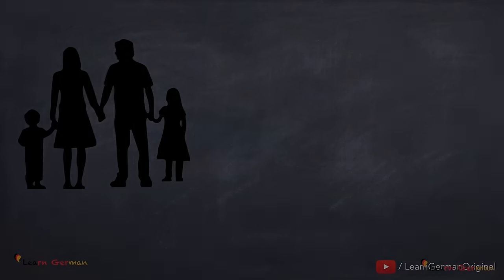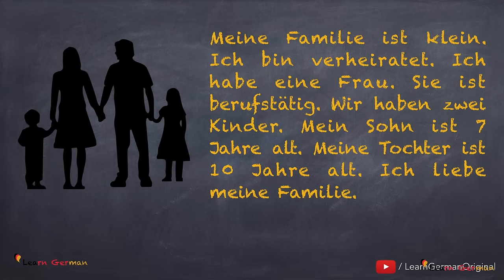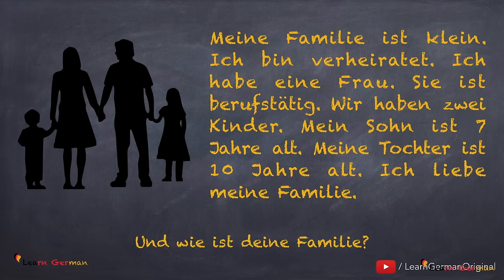Let's look at another small description of a family: Meine Familie ist klein. Ich bin verheiratet. Ich habe eine Frau. Sie ist berufstätig. Wir haben zwei Kinder. Mein Sohn ist sieben Jahre alt, meine Tochter ist zehn Jahre alt. Ich liebe meine Familie. Und wie ist deine Familie?